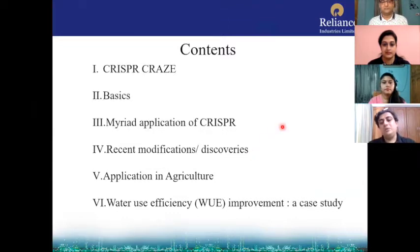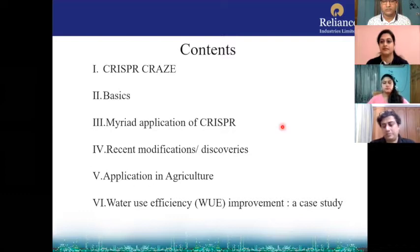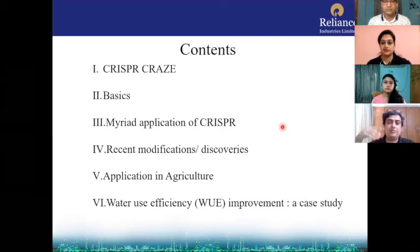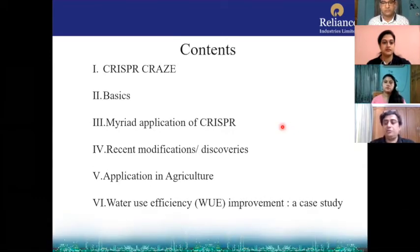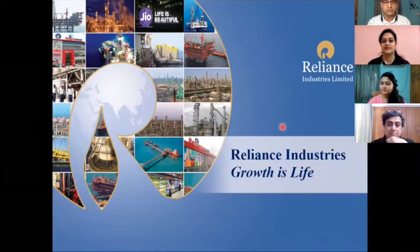I have divided my presentation into six areas within two broader sections. First I start with the history of CRISPR development, then the basic science behind CRISPR, then applications of CRISPR in different fields, then recent discoveries and advancements in the field, then I switch to agriculture and how CRISPR plays an important role there, and finally a case study on water use efficiency — how CRISPR could be used in plants to develop drought-tolerant plants.